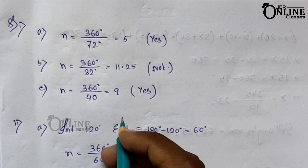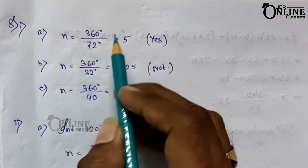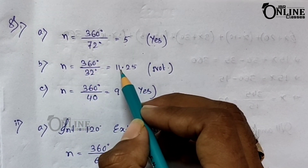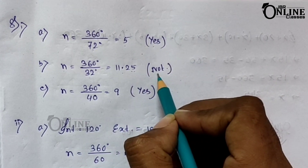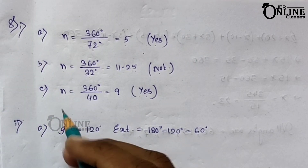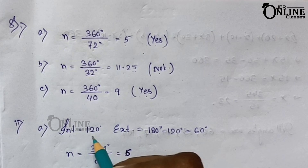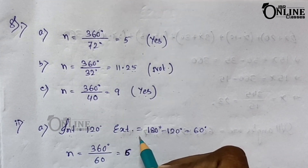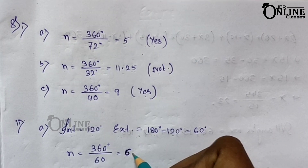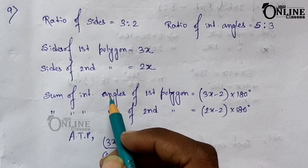Problem number eight: is it possible to draw a regular polygon with a given exterior angle? The formula is n = 360° ÷ exterior angle. For 72°: n = 360 ÷ 72 = 5 — yes, possible. For 32°: n = 360 ÷ 32 = 11.25 — a decimal fraction, so not possible. To check interior angles, first find the exterior angle as 180° minus the given interior angle. If n is a whole number it is possible; if n is a fraction or decimal, it is not possible.